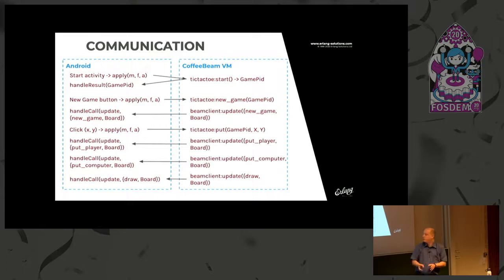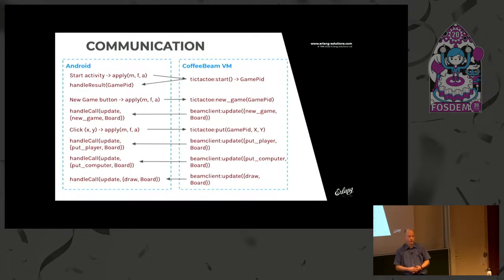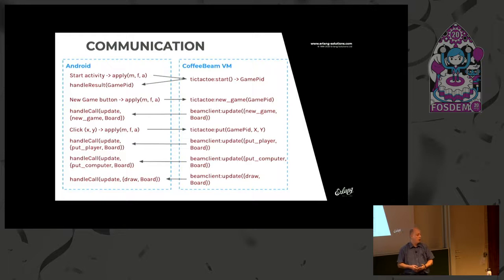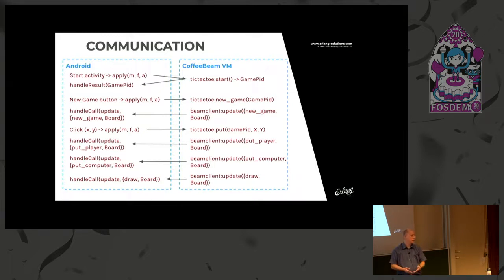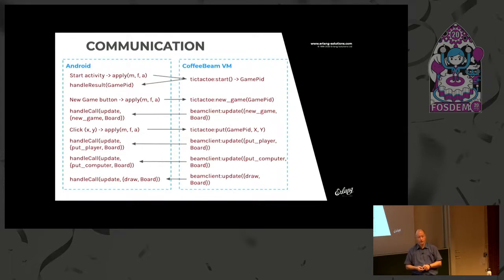I promise you that this will be the most complex slide for today. Let me show the behavior of this Tic-Tac-Toe game that I implemented. First, you start an Android activity, which is basically a way of creating interactive applications. You can imagine an activity as a Java class which has the functionality to interact with the user, getting the GUI elements together, and managing the process in an Android way. It provides GUI processes and other processes as well. From this Android activity, you can call the Beam client to apply a function call to the VM.